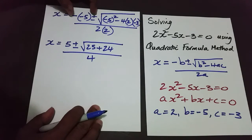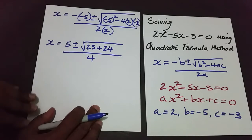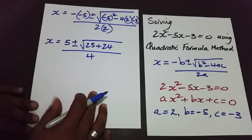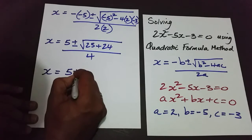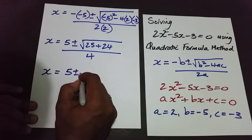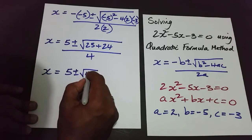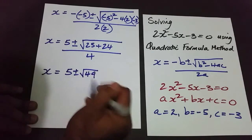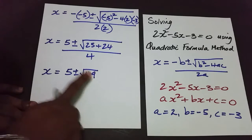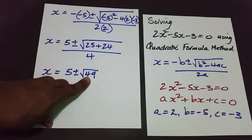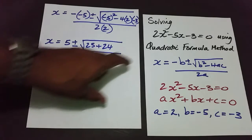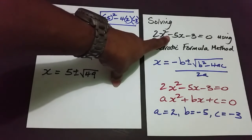Continuing, x is going to be equal to 5 plus or minus the square root of 49. The square root of 49 gives us a nice whole number, which is 7. Normally this helps us know if the equation could have been solved using the factorization method.